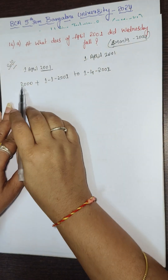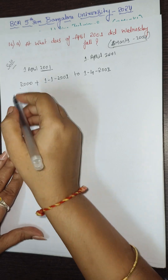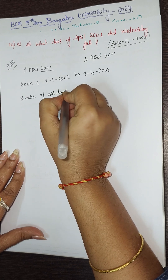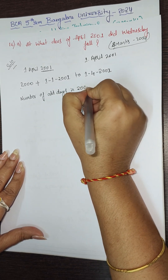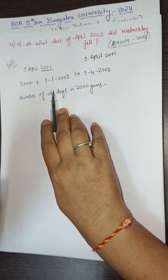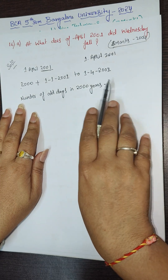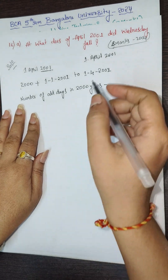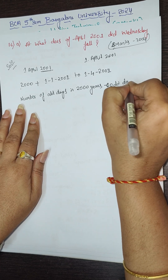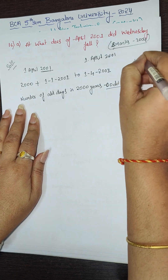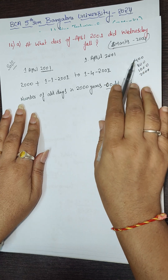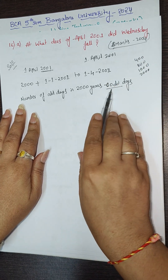Now we need to find the number of odd days in the year 2000. We know that for multiples of 400 years — 400, 800, 1600, and 2000 years — the number of odd days is zero. So for 2000 years, the number of odd days is zero.